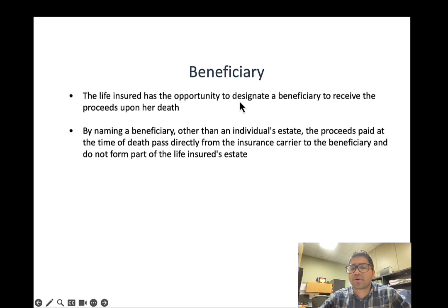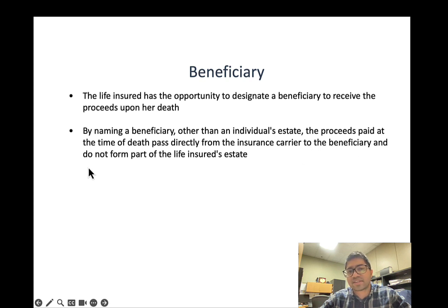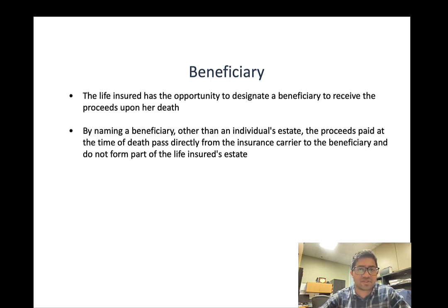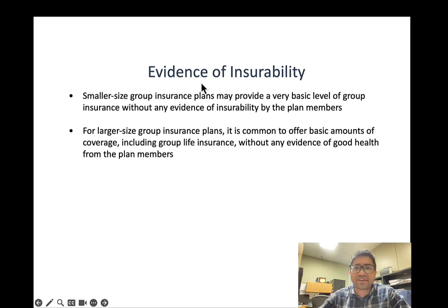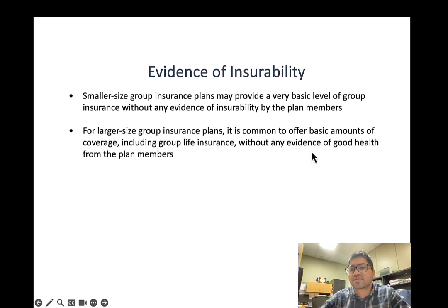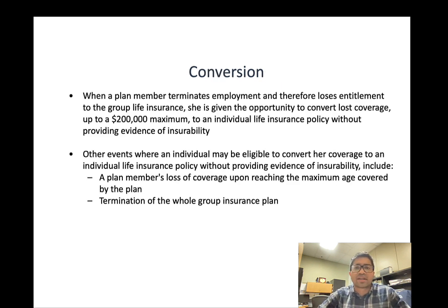The life insured can designate a beneficiary to receive proceeds upon death. By naming a beneficiary other than the estate, proceeds pass directly from the insurance carrier to the beneficiary and do not form part of the estate, avoiding estate taxes. For smaller group plans, basic coverage may be offered without any evidence of insurability, meaning no health checkups are required. For larger plans, it is common to offer a basic amount of coverage including group life insurance without evidence of good health.